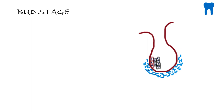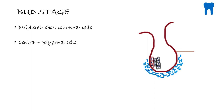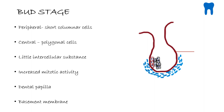This is the bud stage. It is called the bud stage because the shape of the enamel organ is in the form of a bud. The peripheral cells are short columnar cells. The central cells will be polygonal in shape and will contain a little intercellular substance. The ecto-mesenchyme surrounding the bud is called the dental papilla, which is going to give rise to the dentine and the pulp. The enamel organ will give rise to the enamel. The basement membrane is present separating the cells of the enamel organ from the ecto-mesenchyme. Importantly, there is increased mitotic activity in the bud stage — the cells are in a state of active proliferation.